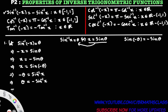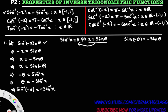Now observe the first step of this proof. We took sine inverse of minus x as theta. So in place of theta, write sine inverse of minus x. Therefore, sine inverse of minus x equals to minus sine inverse x. We proved the first result. This result holds good when x belongs to the closed interval minus 1 to 1.